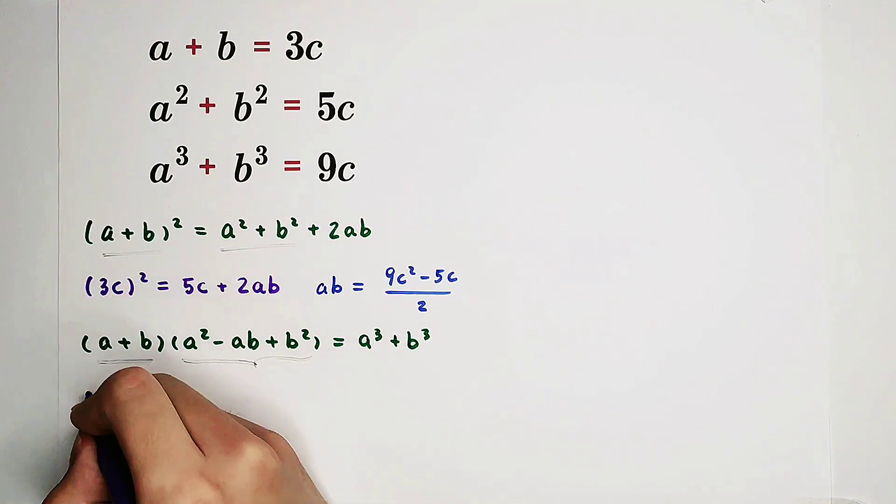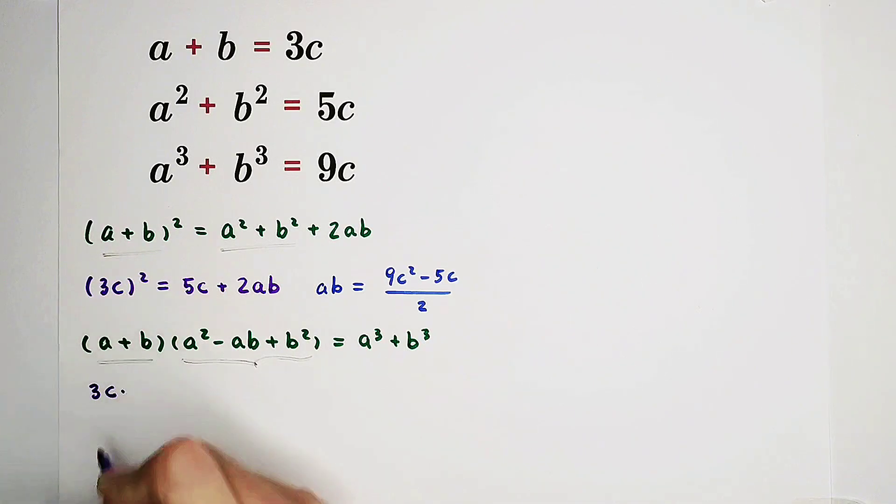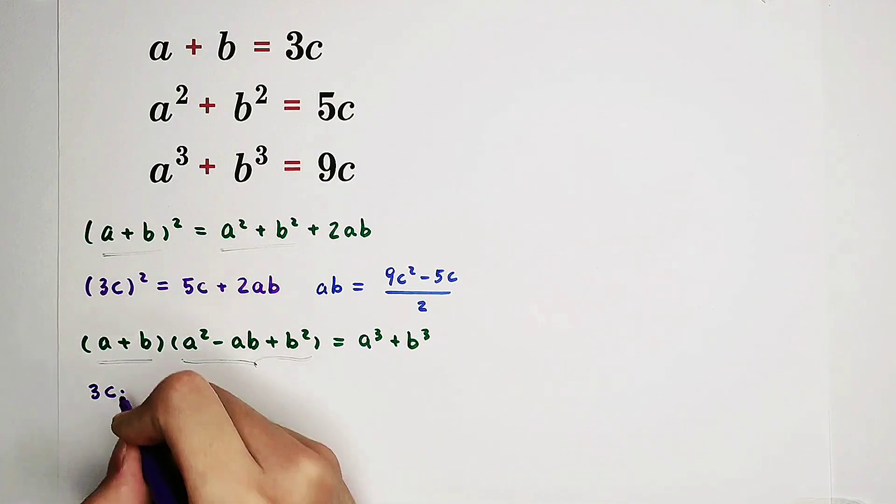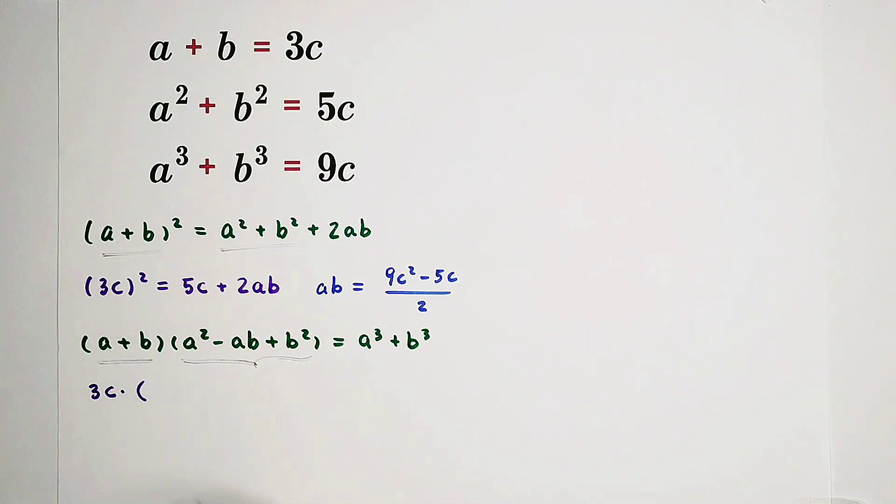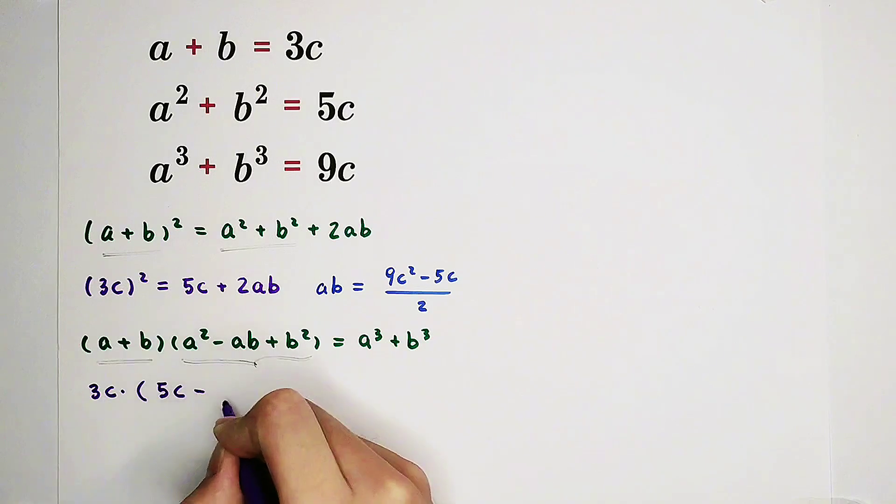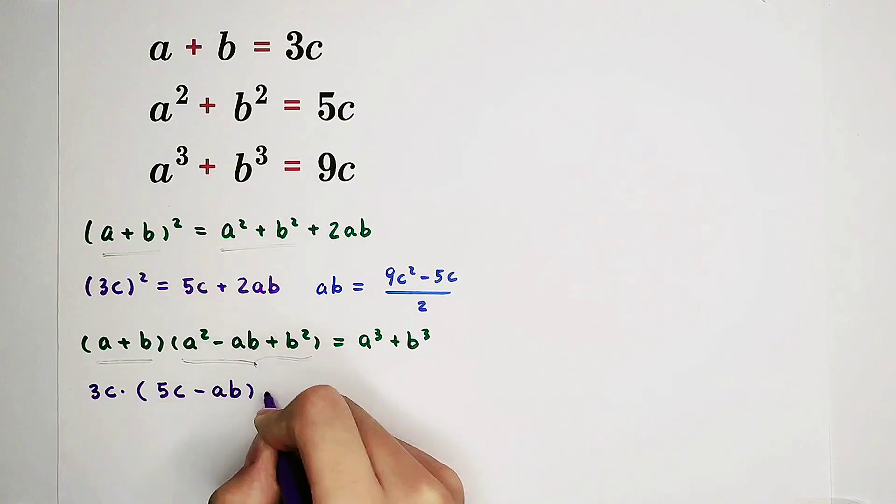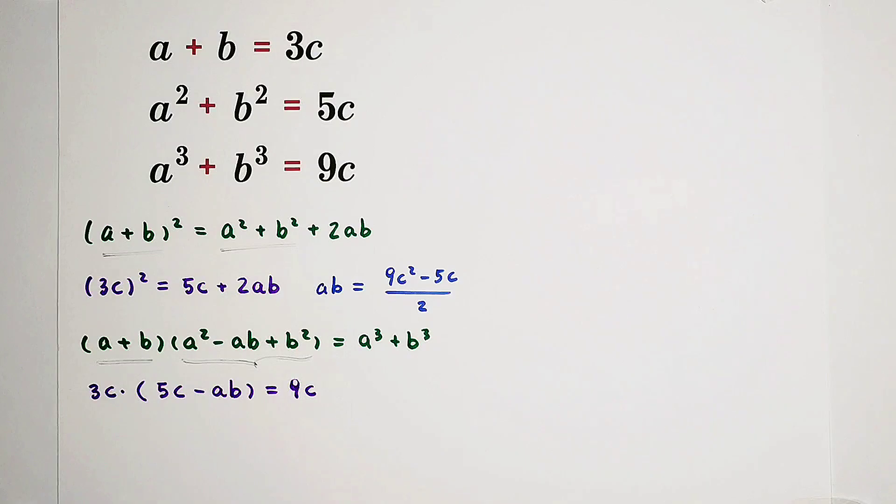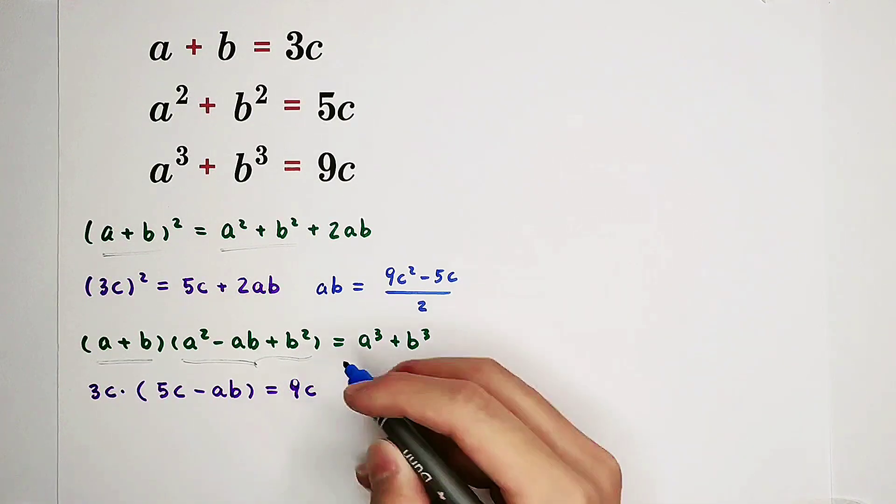Of course, a plus b is 3c, then times a squared plus b squared is 5c. So it is 5c minus ab equals, this is 9c. From this equation, we can get another expression for a times b.